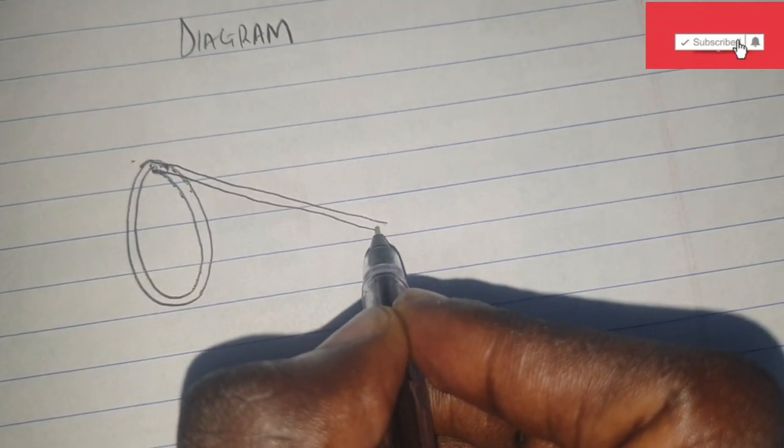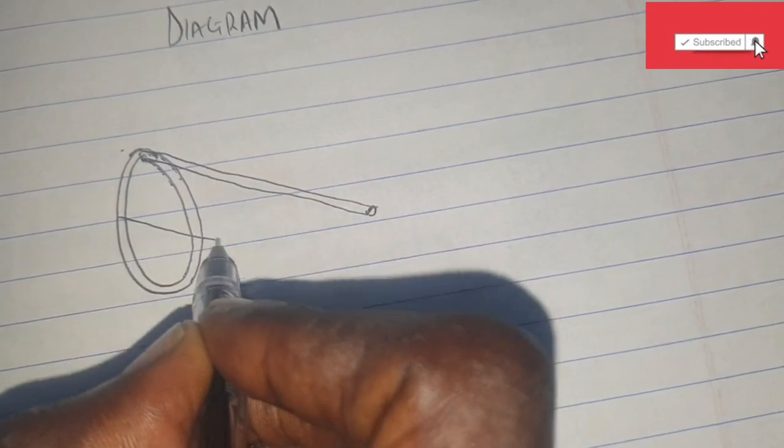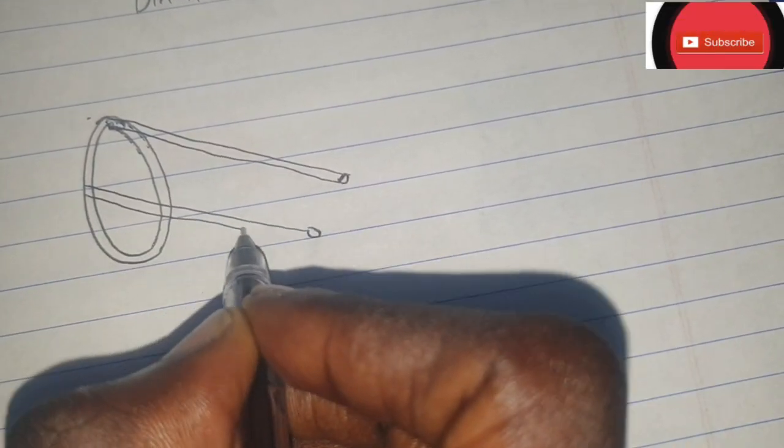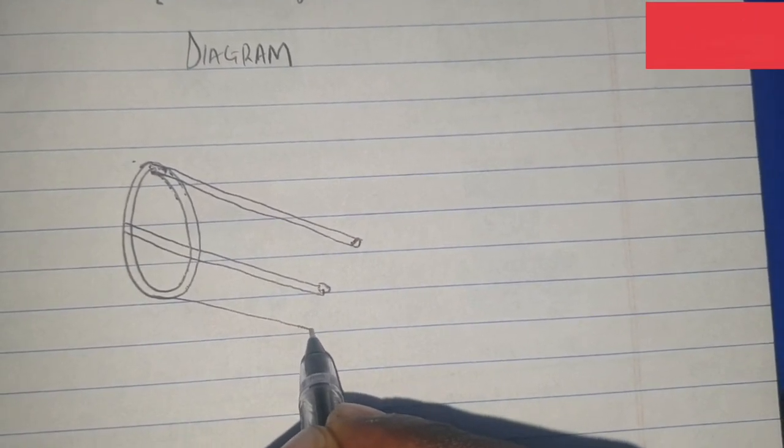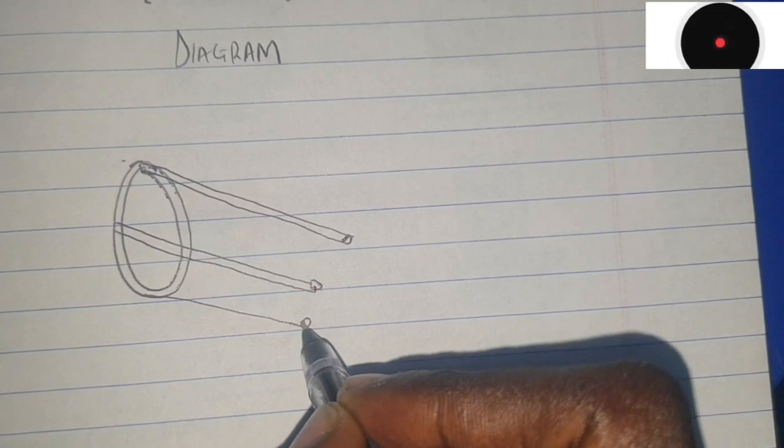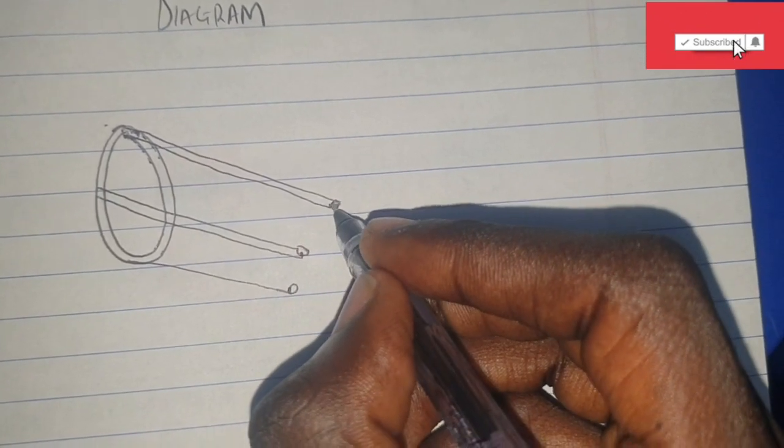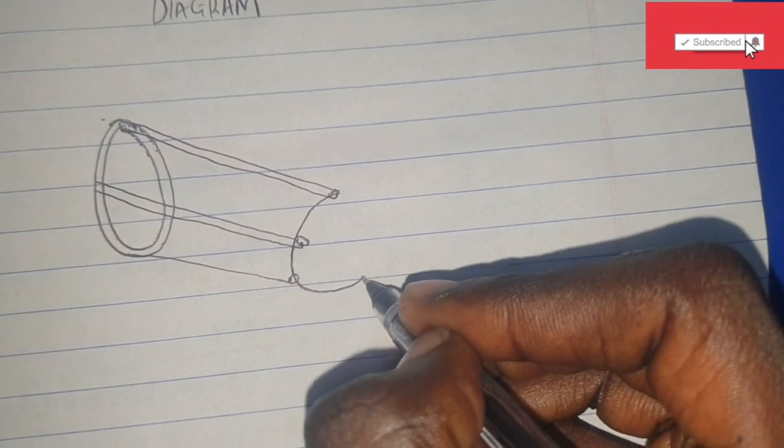In this short-circuited end we have what we call copper bars. So as you see, these are the copper bars that I'm sketching here. These copper bars are welded or brazed to the end rings.